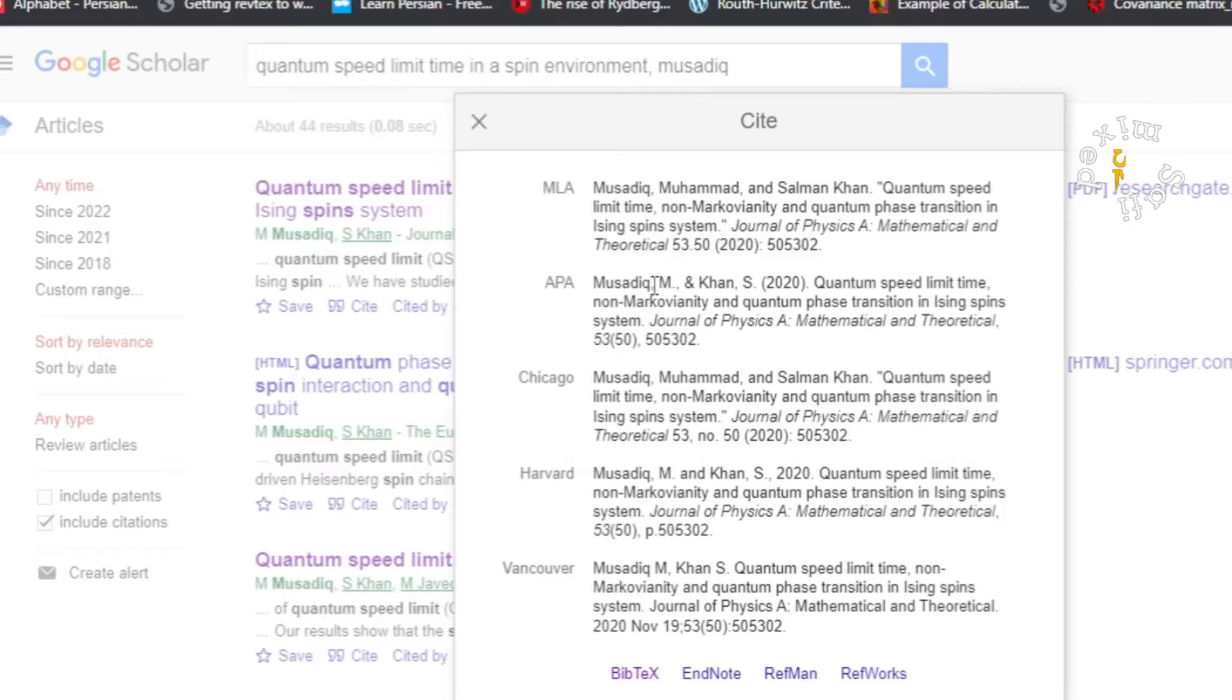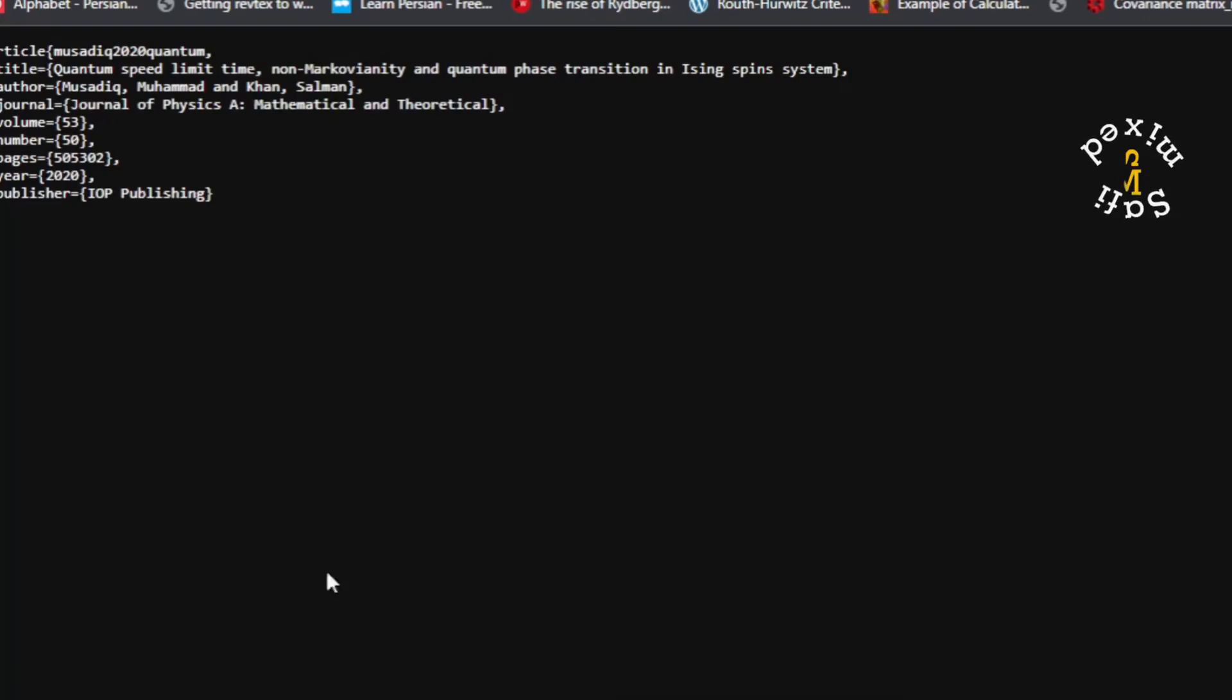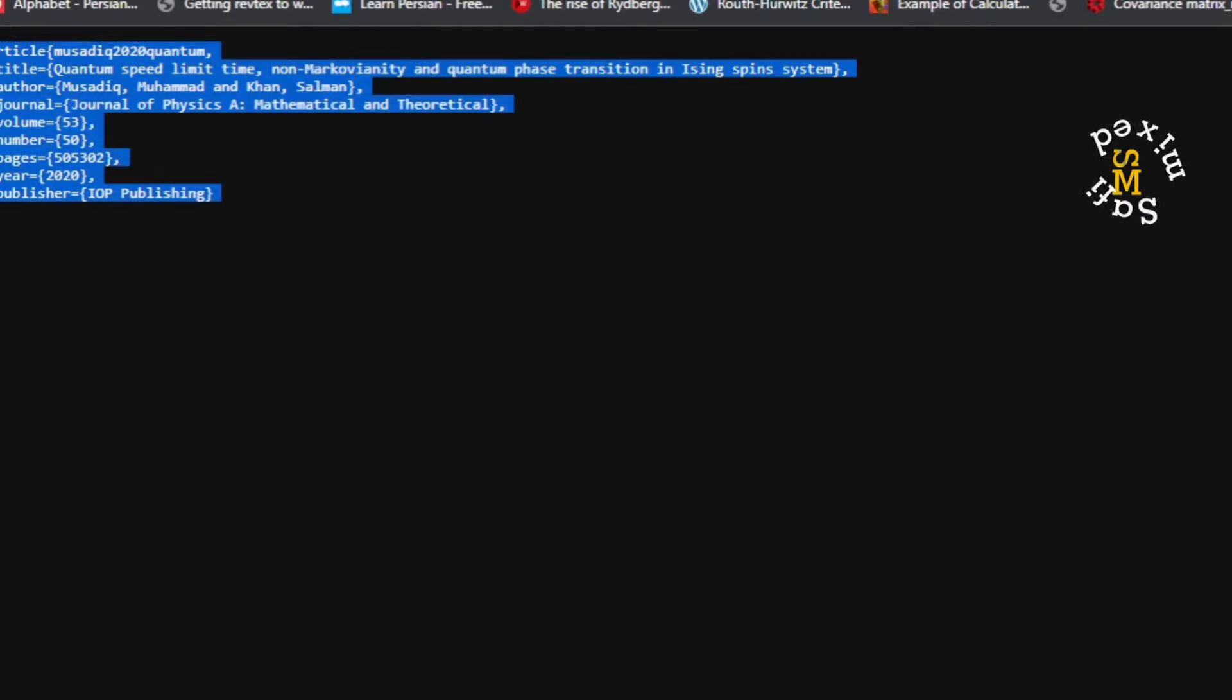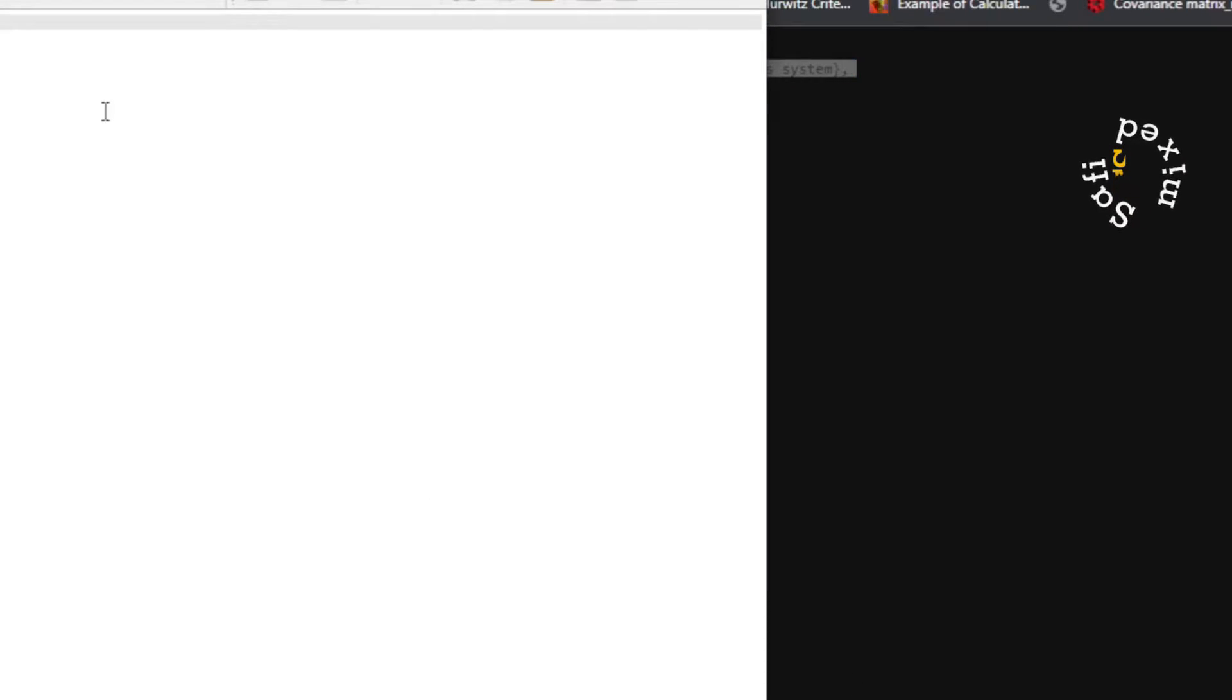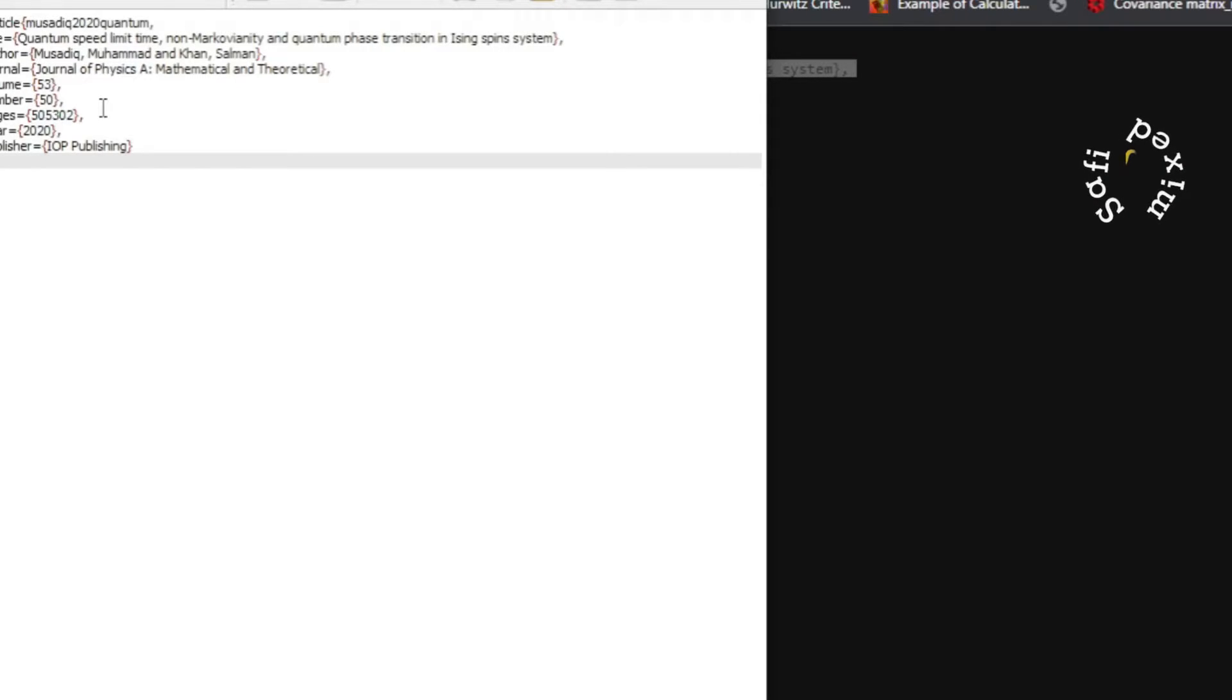So there are different styles available for the citation MLA, APA, Chicago, Harvard, etc. I click on bibtex and copy this format of the citation by selecting the whole of it and then clicking ctrl c and coming back to the reference.bib file and I just paste this over here.